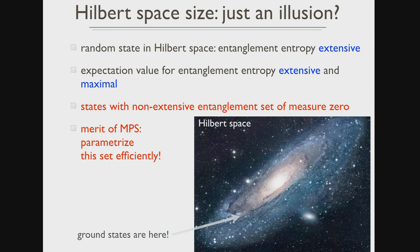Even worse: if you build an average over all states of Hilbert space, not only is this expectation value extensive, but it's even maximal — it's maximally entangled. This leaves open the gap that states with non-extensive entanglement exist, but this must be a set of measure zero — an extremely small corner of Hilbert space. The merit of matrix product states is that because they are good at encoding low-entanglement states, they parametrize this set efficiently. But if you do something to your physical system that kicks it out of this cozy corner, you must expect that entanglement grows a lot, and the simulation breaks down.